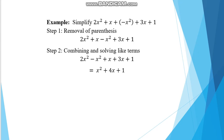Step two: combine and solve like terms. Bringing like terms together: 2x² − x² gives x²; x + 3x gives 4x; and the constant is 1. Since there are no further like terms, the final answer is x² + 4x + 1.